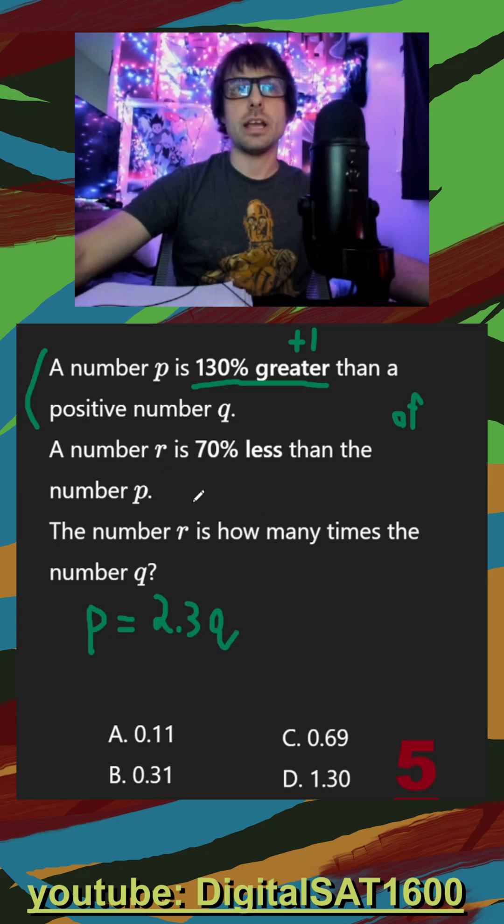And then our second equation, a number R is equal to, turn it into a decimal, 0.7 less than the number P. So 70% less means it would be 0.3 P.